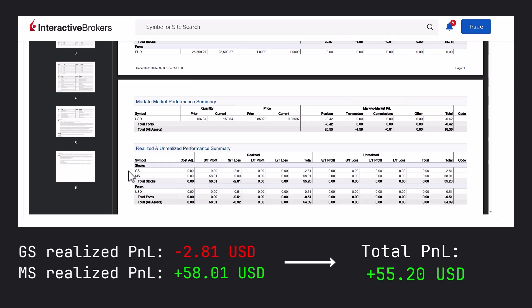In this statement you can find the realized PNL on Goldman Sachs and Morgan Stanley. This is a trade setup that we closed last week on Thursday, the 28th of August. On Goldman Sachs, we closed that position at a loss of minus 2.81 US dollars, but we made 58.01 US dollars on Morgan Stanley. So the overall profit of those two positions is 55.20 US dollars. I'll keep you up to date about the strategy and we'll see how it performs over the course of this year.